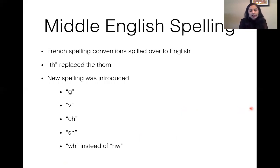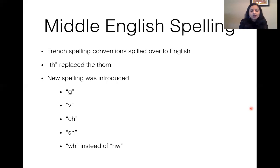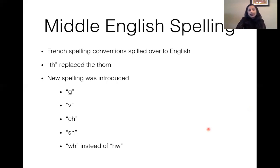A brief history of Middle English spelling — we will talk more about this in the next lecture. The Middle English spelling: this was the era when the thorn symbol was replaced with 'th', and new spelling was introduced for sounds such as g, b, ch, sh, and wh — like 'who' instead of 'hw' — and the reason for this was the influence of French on English. A lot of French spelling conventions spilled over into English.